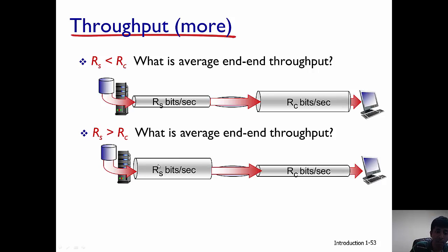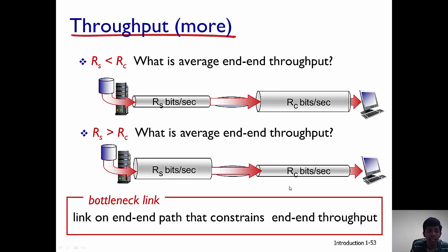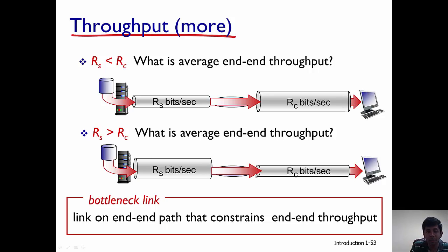Now consider the scenario where the first pipe is thicker, meaning R_s is greater than R_c. The number of bits that can flow through the first pipe is much greater than what can flow through the second pipe, so the throughput is determined by the capacity of the second pipe, R_c. The takeaway is that the bottleneck link — the link on the end-to-end path with the least capacity — constrains the end-to-end throughput.